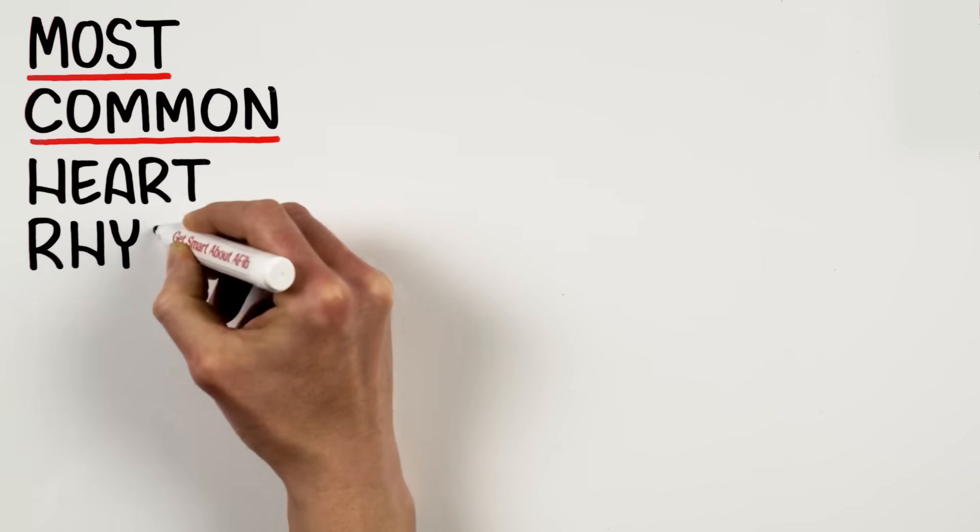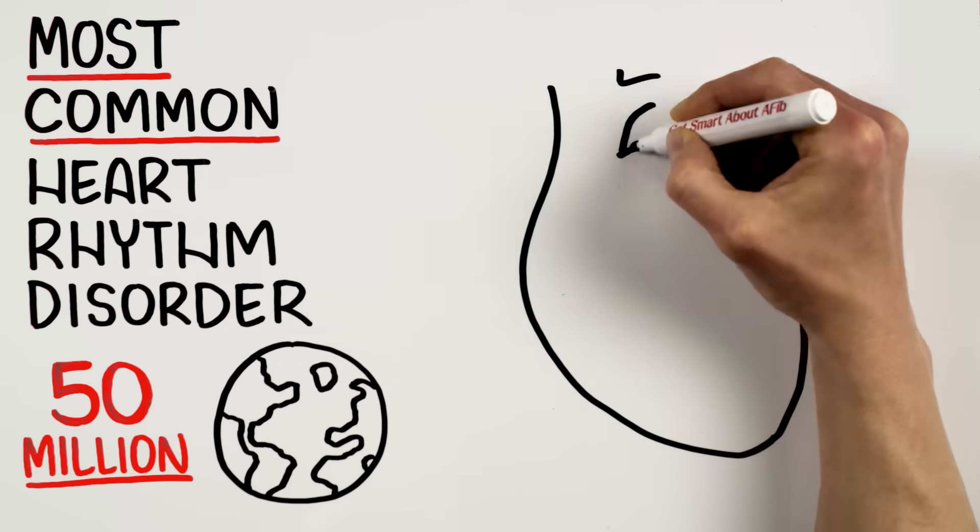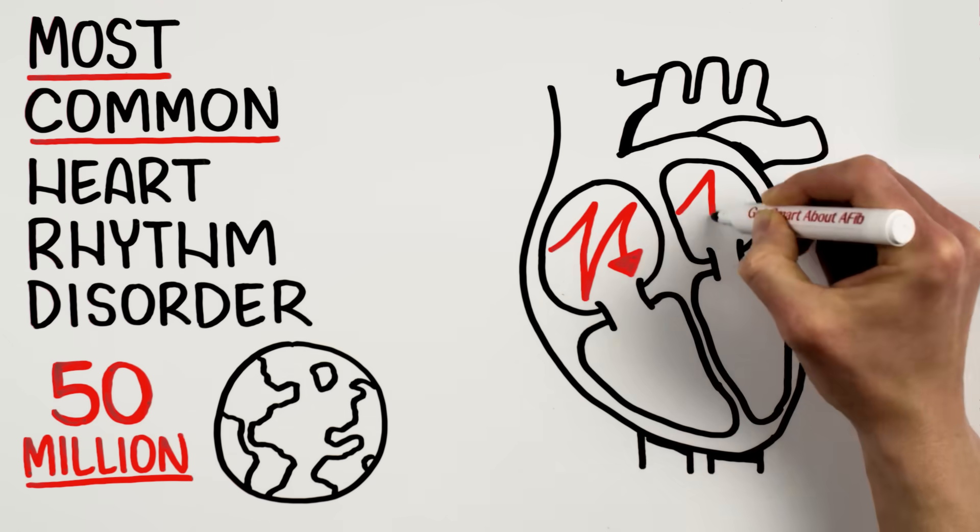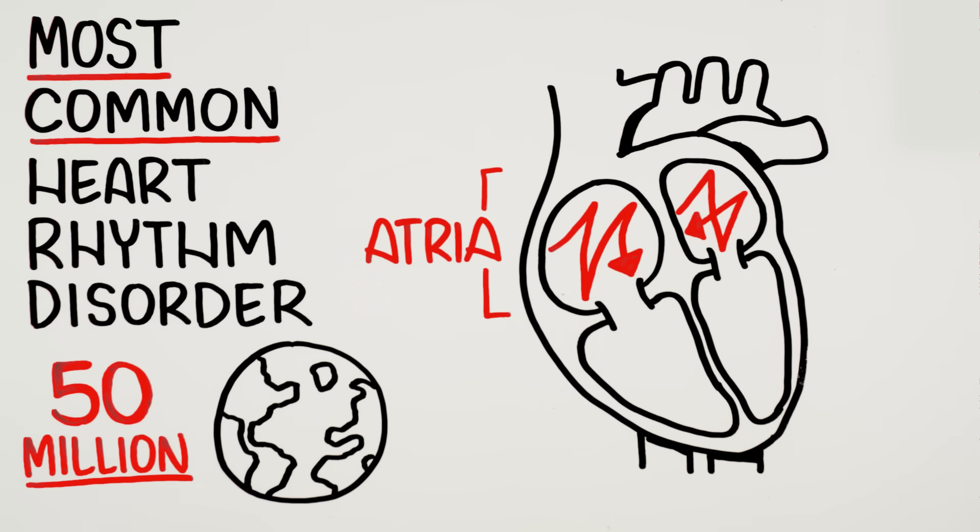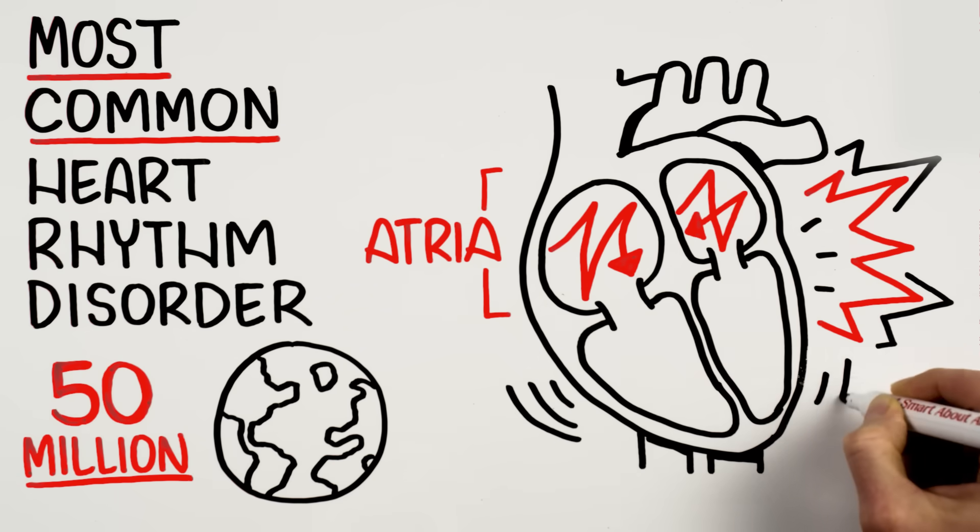AFib is the most common heart rhythm disorder, affecting 50 million people globally, occurring when the upper chambers of the heart, or atria, beat in an uncontrolled manner. This can feel like your heart is skipping a beat, fluttering, or beating too fast.